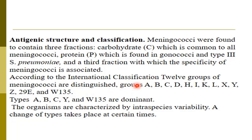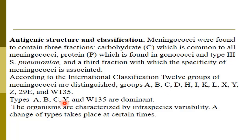When we talk about the fractions of meningococci: carbohydrate C, which is common to all meningococci; protein B, which is found in gonococci and is characteristic of Neisseria gonorrhoeae and type 4 Streptococcus pneumoniae; and a third fraction with which the specificity of meningococci is associated. The serogroups A, B, C, Y, and W135 are dominant.